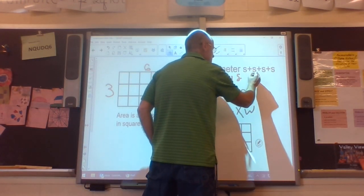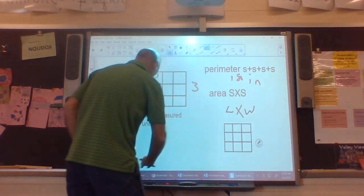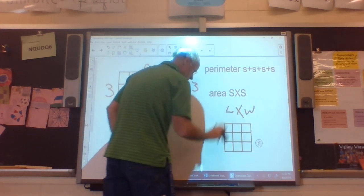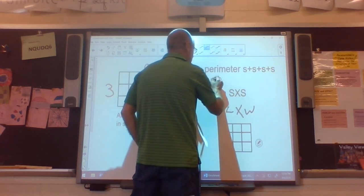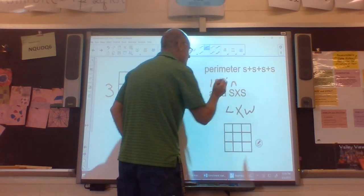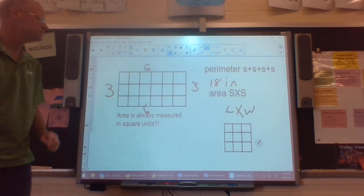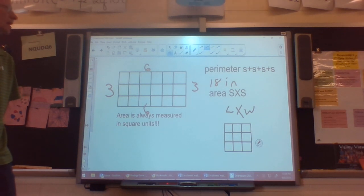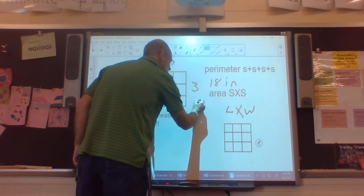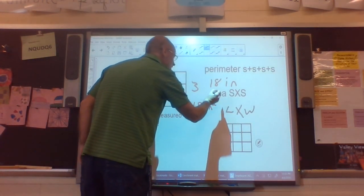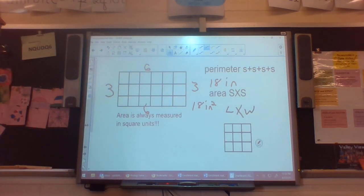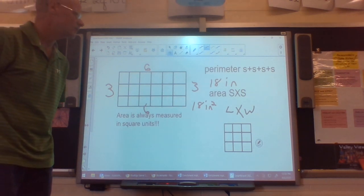My smartboard is not cooperating with me again today. Now I want to know the area. I have to do three times six for the area. Three times six is 18. My inches are squared on this. So 18 inches squared. It just so happened on this problem, our area and our perimeter ended up being the exact same answer. It doesn't happen very often.